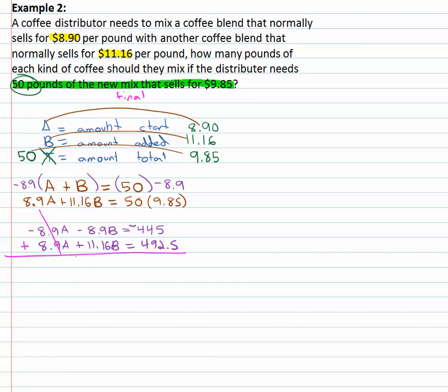Add these together, the A's are gone. Combining the B's together, we end up with two point twenty six B's is equal to negative four forty five plus four ninety two point five.